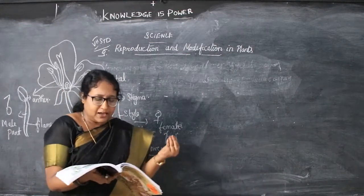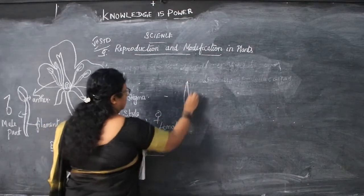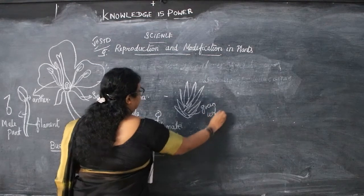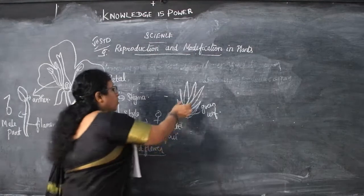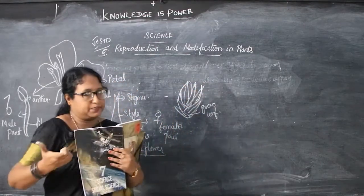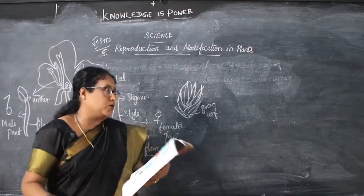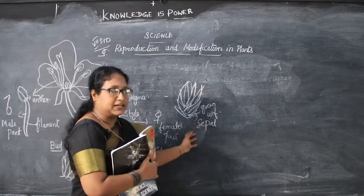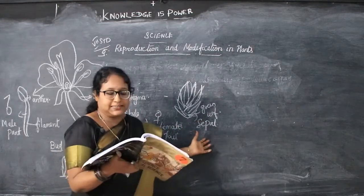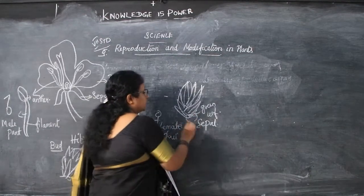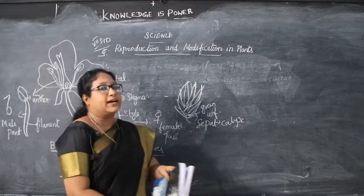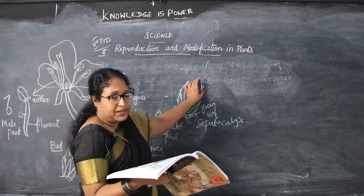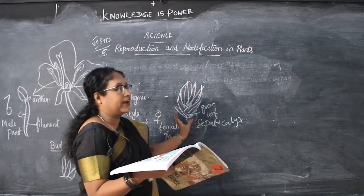In the bud, you see a green, leaf-like structure that covers the whole bud of the flower. This outermost layer is called the sepal. The outermost ring of sepals together is called the calyx.